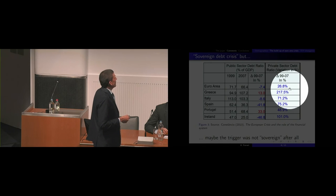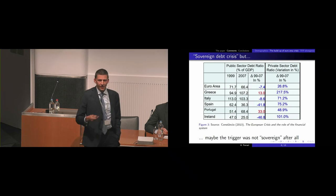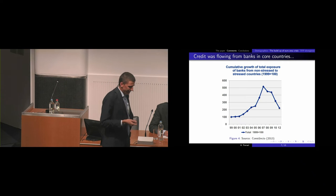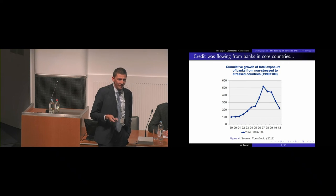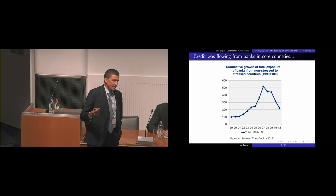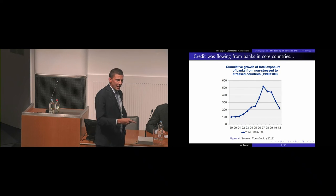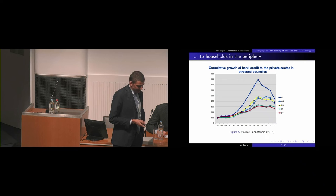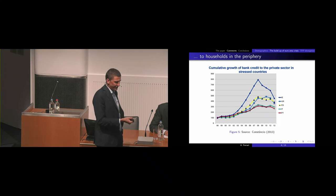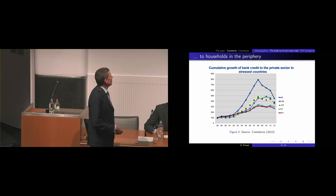What was true was that they were increasingly and massively accumulating private debt. The issue was much more on the private than on the public side. Looking at the flows, the cumulative growth of exposures of banks from core countries — non-stressed core countries like France or Germany — toward banks of stressed countries was increasing a lot. This private credit was accumulated in the core countries, given to the peripheral countries, and was increasing massively in what would become the stressed countries.